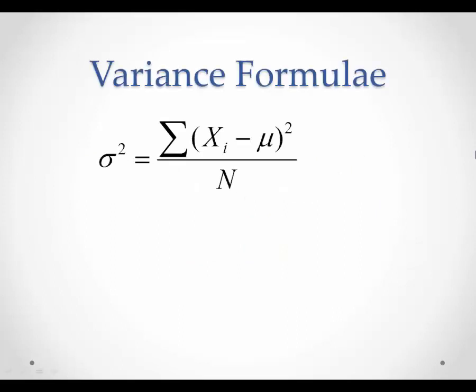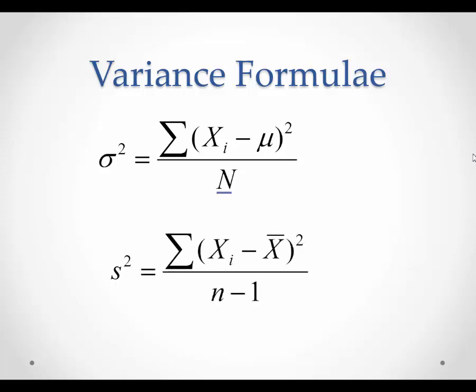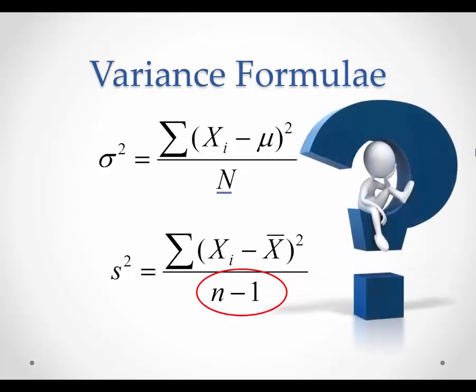This is a population variance formula. Note that in the denominator, we divide by the population size, big N. Here is the sample variance formula. Notice that in the denominator, we now divide by n-1. Why is this the case? Why are they different?